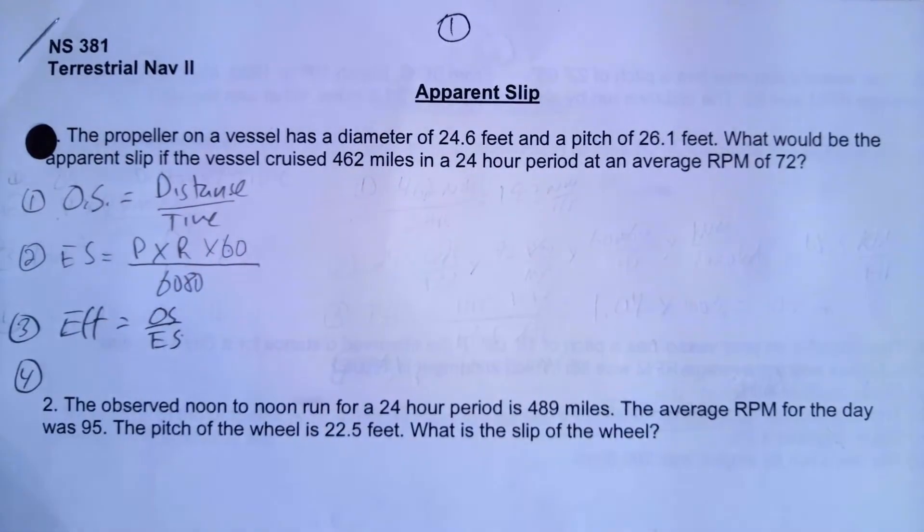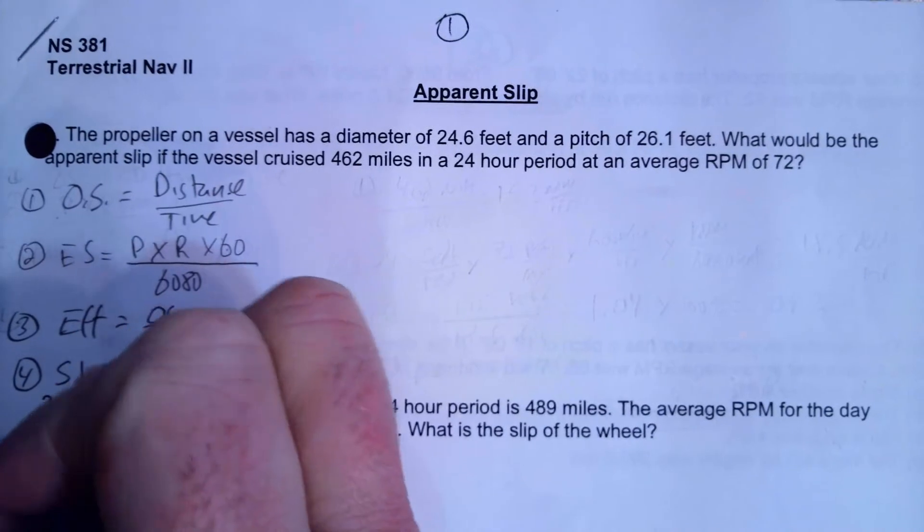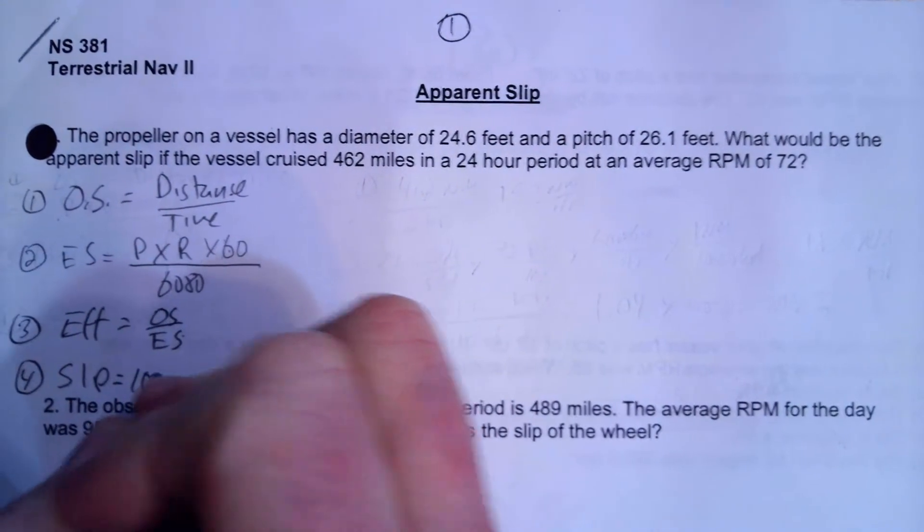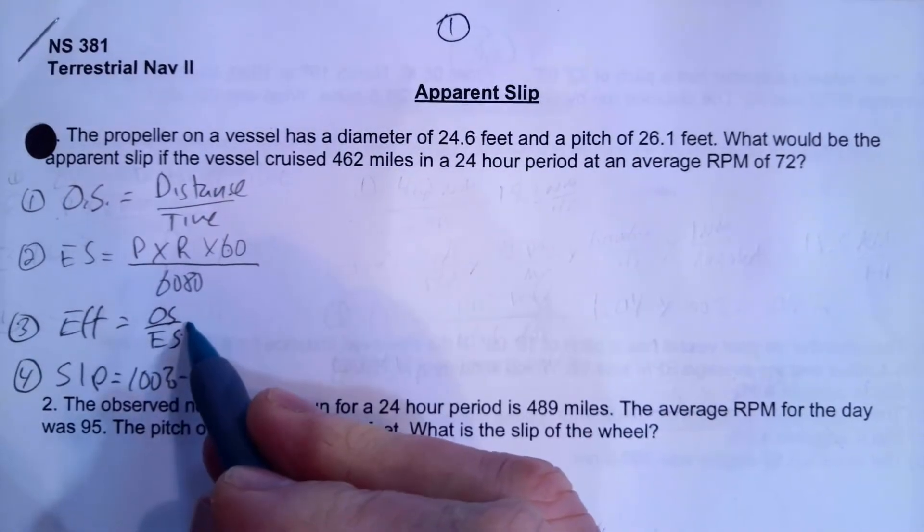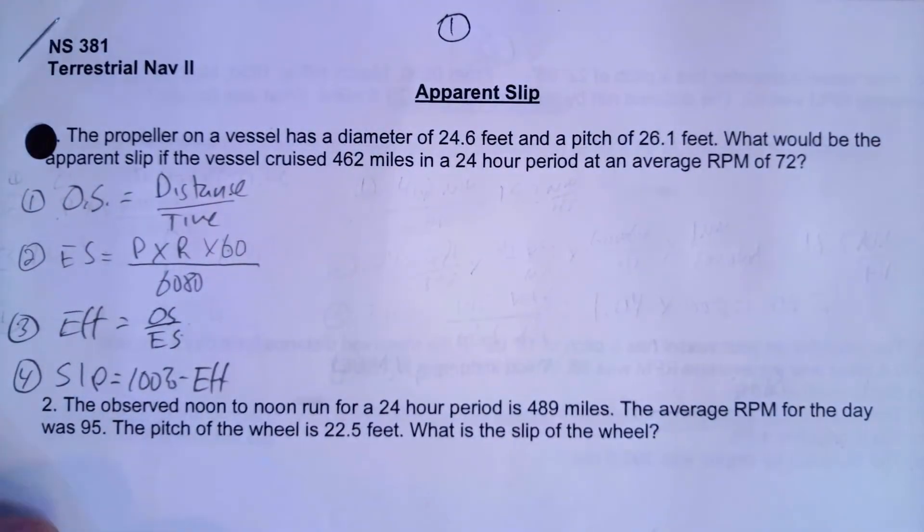And then the fourth formula you're going to need is to calculate slip, and slip is 100% minus efficiency. So once we calculate this, we'll substitute it into that.